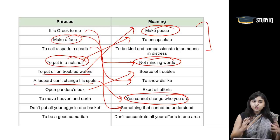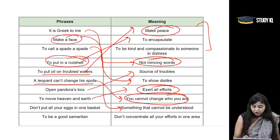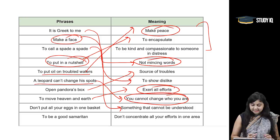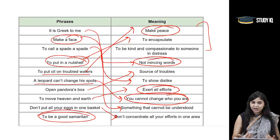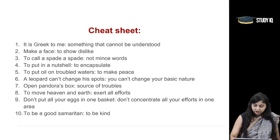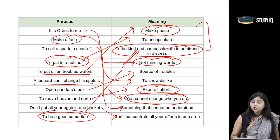'To move heaven and earth' — iska arth hota hai jab aap apni puri efforts laga dete hai, pura ka pura hard work laga dete hai — when you are exerting all your efforts. 'Don't put all your eggs in one basket' — aap apni efforts ko ek jagah pe kabhi bhi kendrit na karein, never concentrate all your efforts in one area. 'To be a good Samaritan' — when you are being very compassionate, jab aap bohut zyada generous ho rahe hai, dayalu ho rahe hai — especially to someone who is in distress.